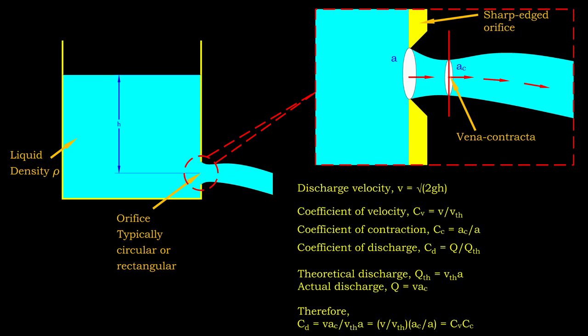Let's define the actual flow at vena contracta. Then, let the coefficient of discharge, cd, be the ratio of actual to theoretical discharge of the jet. We may substitute both coefficients of velocity and contraction and simplify the correlation. Eventually, we know cd is the product of cv and cc.